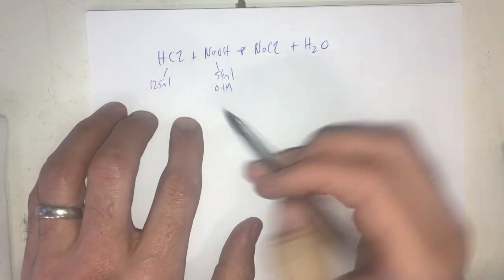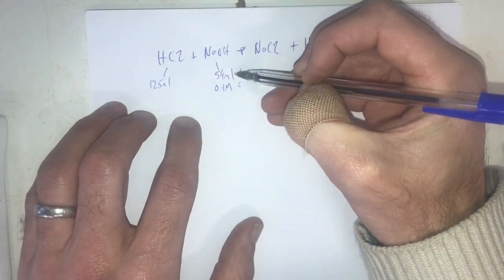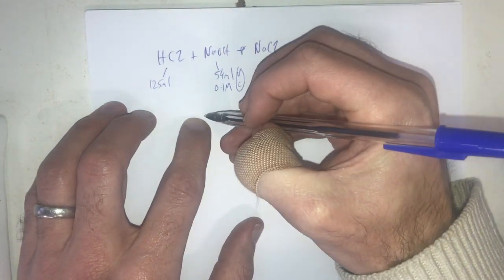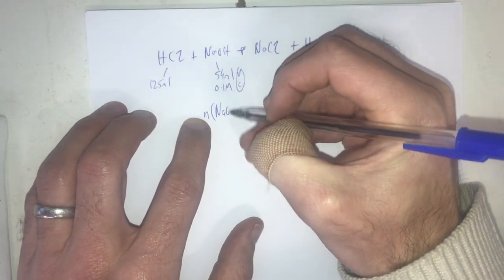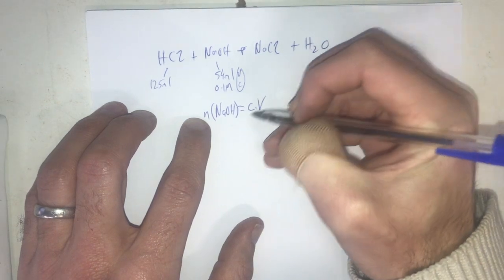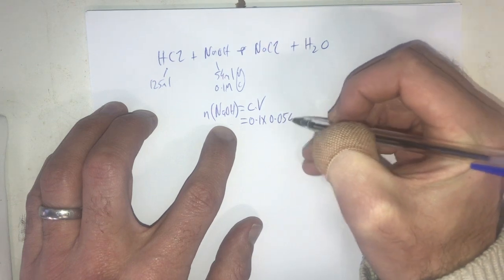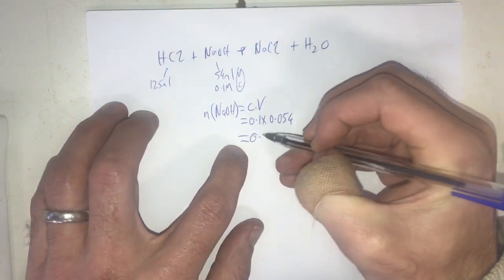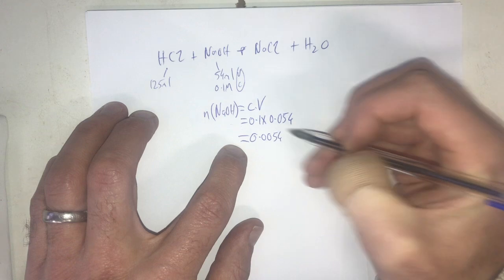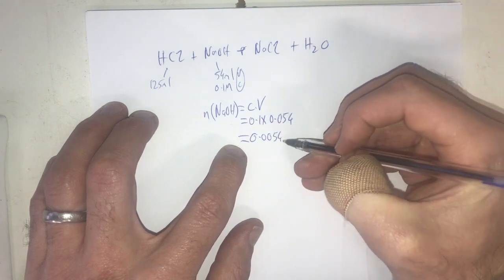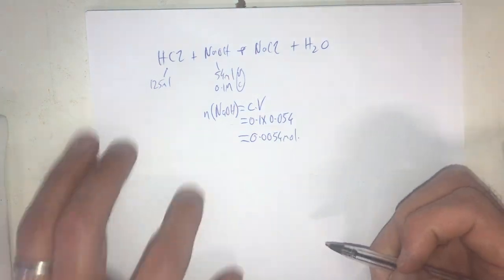Now what that tells me is I have volume and concentration of sodium hydroxide so therefore I can find number of moles here. So I'm going to find number of moles of sodium hydroxide that's going to be equal to C times V which is going to be 0.1 times 0.054. So that's going to be 0.0054. I don't need to use my calculator because I know it's 0.1 so it's going to move the decimal point so that's going to be how many moles of sodium hydroxide I have.